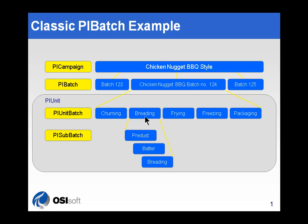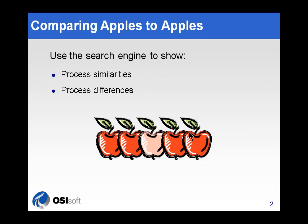Wouldn't it be great if you could compare one of these repeated events to another? To be able to compare apples to apples — exactly what's going on among these different batches — so that you can spot the batch that's having problems, or maybe the batch that is the golden batch, the very best batch you ever made, and you'd like to be able to document what that was and how to repeat it.